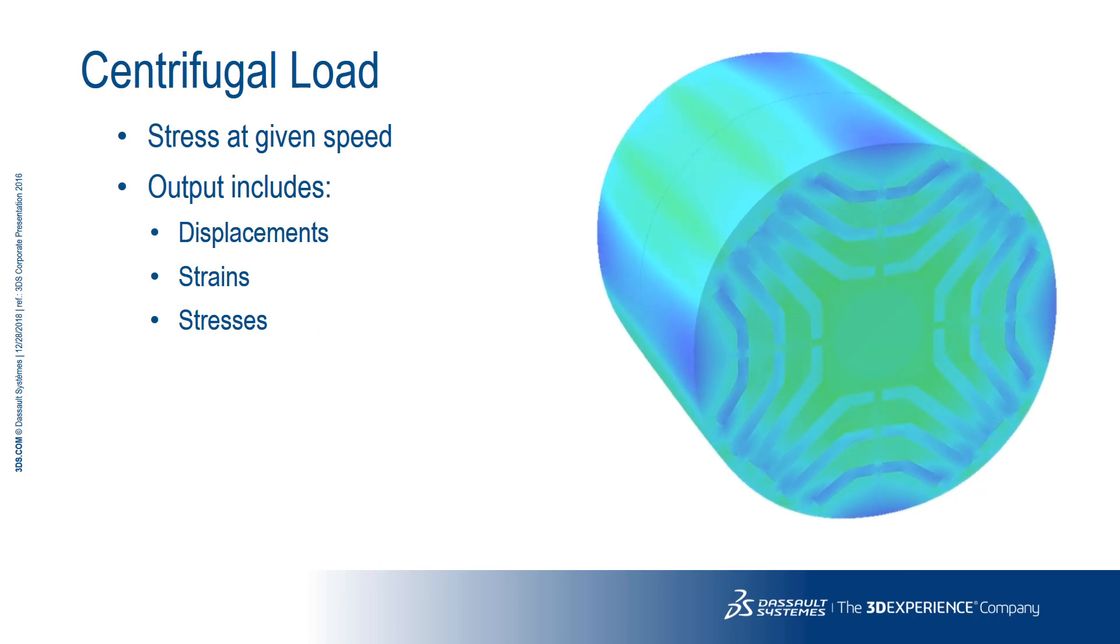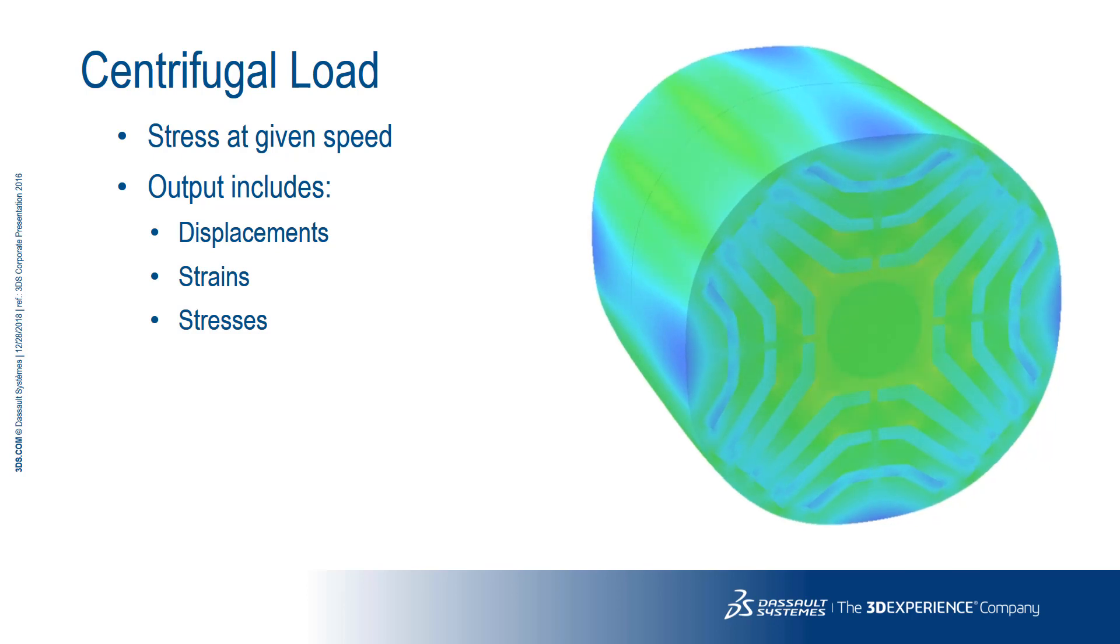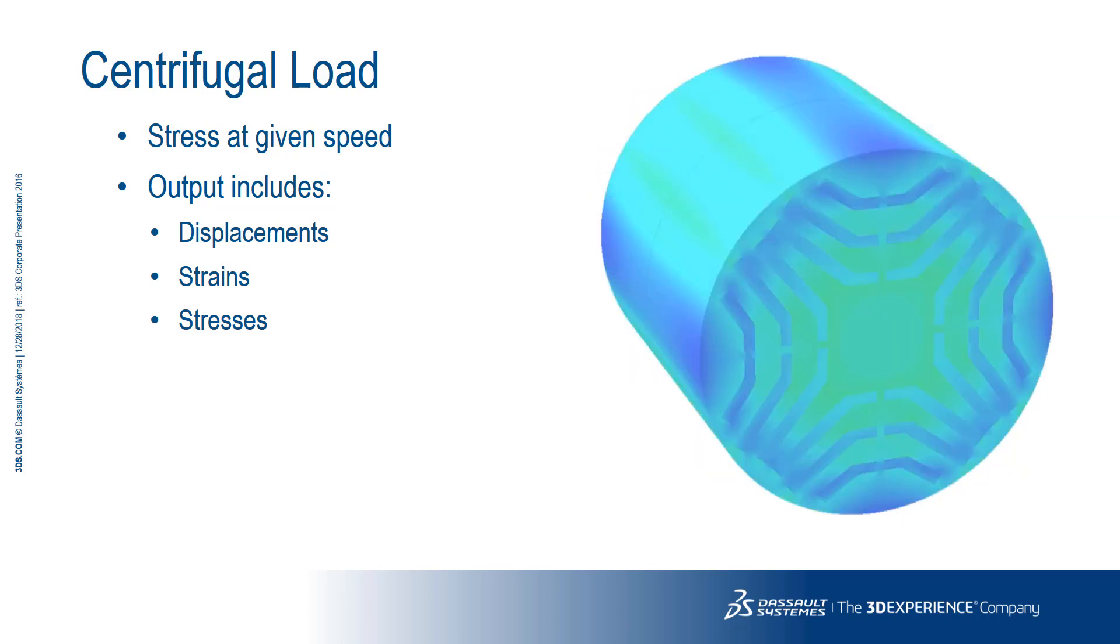The machine's environment centrifugal load analysis creates a single static stress analysis for a user-defined rotor speed. The output includes the value of maximum displacement and the peak von Mises stress, and a plot of the von Mises stress.